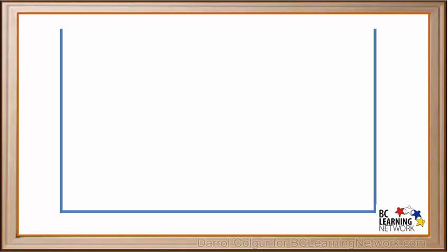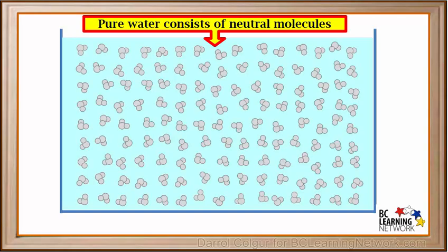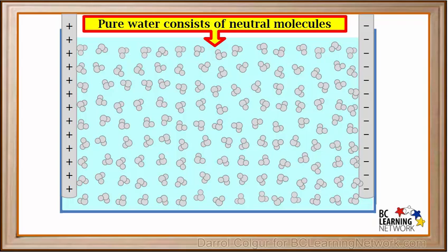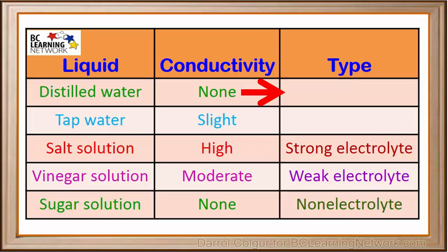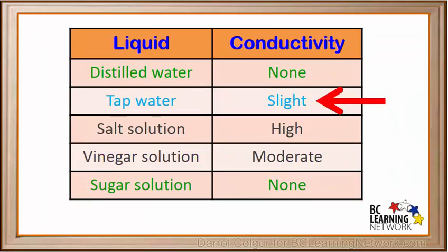Now we'll take a closer look at distilled water. A simple model of water shows that it is made up of a large number of neutral water molecules. We'll dip positive and negative probes from our conductivity tester into the pure water. Water molecules are not charged, so they aren't attracted to the charged probes. There is no flow of charges, so distilled water does not conduct electricity. Because distilled water or pure water has no conductivity, we can call it a non-electrolyte.